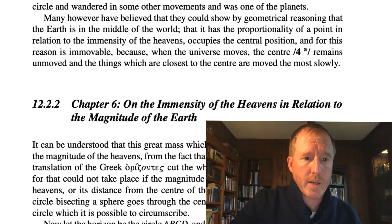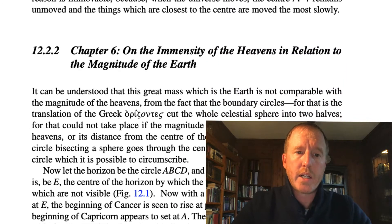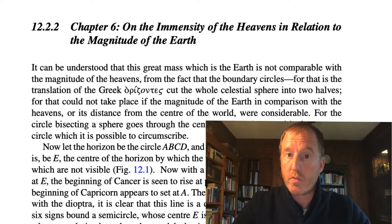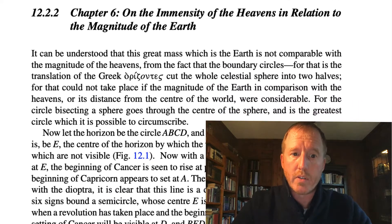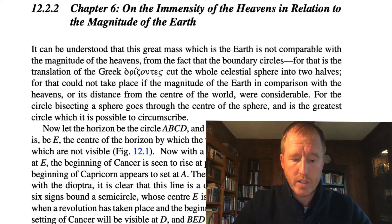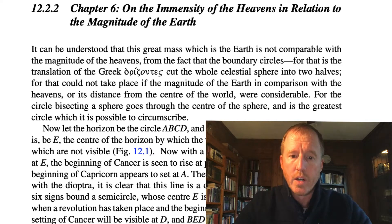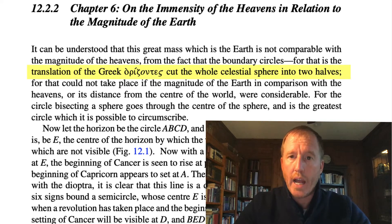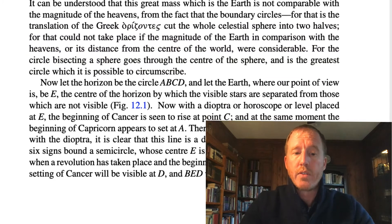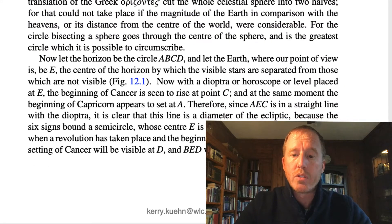Let's move on to chapter six. In this chapter, Copernicus is reminding us that the heavens — that sphere of stars very distant from us — is immense compared to the size of the earth. He argues, drawing straight from Ptolemy, that if you look out at the horizon, the horizon cuts the celestial sphere in half — half of the zodiac is above the horizon and half below. He talks about how if Cancer is beginning to rise on one side of the horizon, then Capricorn is beginning to set on the other.